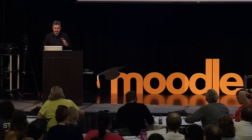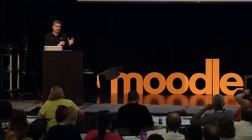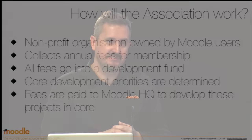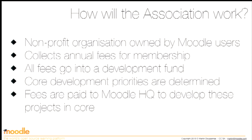So this is a non-profit organisation. It's owned by users. Moodle HQ is setting it up, but then we're stepping back and it's just going to be an autonomous organisation. It collects annual fees for membership, which go into a development fund. There are processes they go through in the association to determine priorities and what they want to work on. The association then hires Moodle HQ to develop those things in core. Our job is to maintain a crack team of Moodle core developers who are working together with all the processes set up to efficiently make Moodle software.